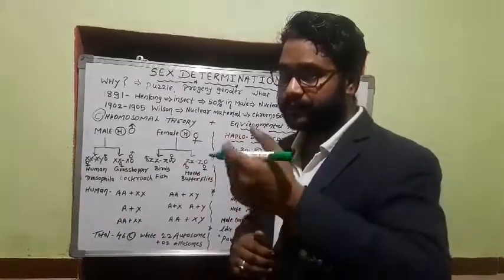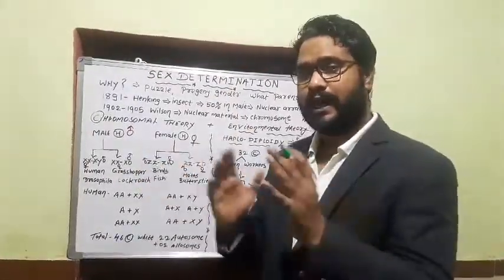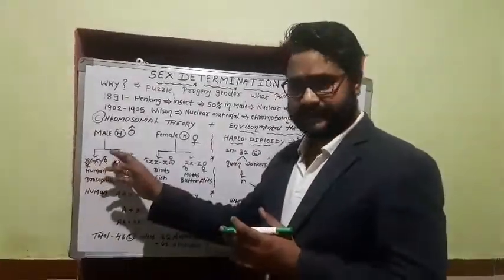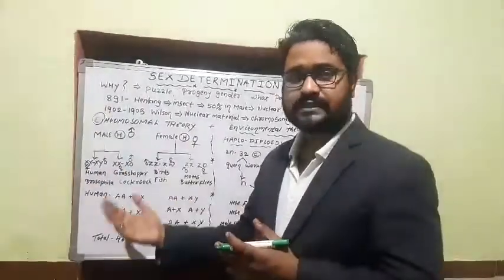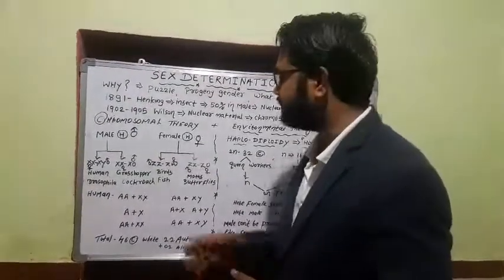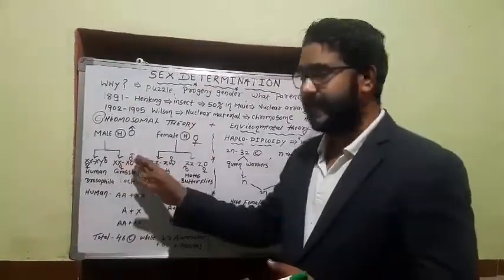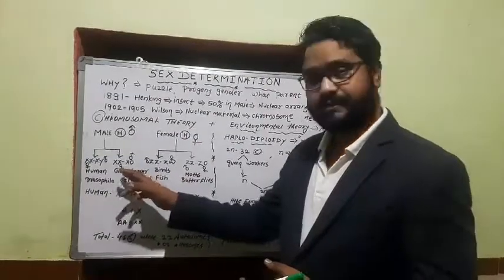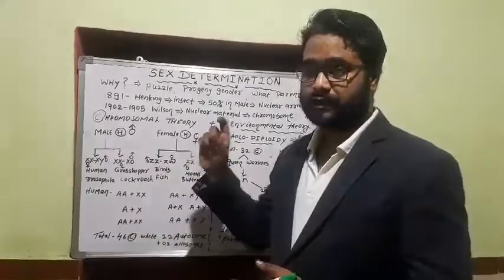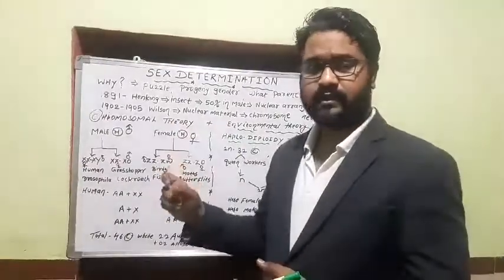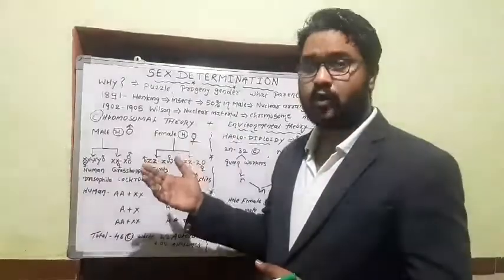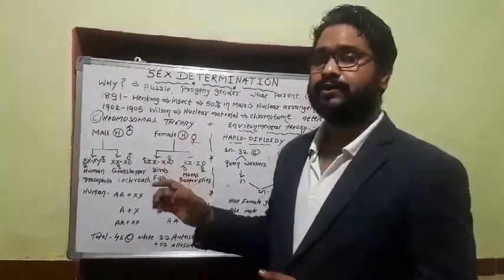We must memorize the examples correctly for matching-type questions. The XX-XY system is studied in humans as well as in Drosophila melanogaster, the fruit fly of Thomas Hunt Morgan. The XX-XO system, as per NCERT, is present in grasshoppers and some cockroaches. So: XY — humans and Drosophila; XO — grasshoppers and cockroaches.